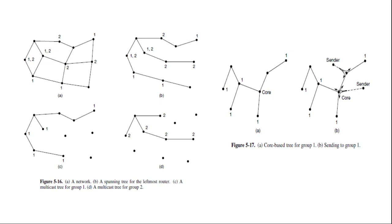When the packet reaches the core, it is forwarded down the tree, in figure B for the sender on the right-hand side of the network.